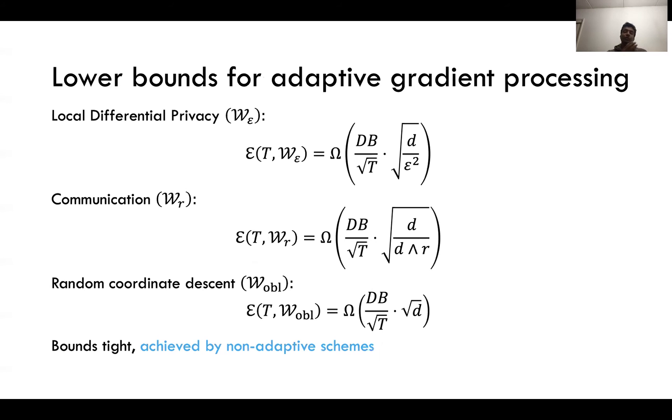In our work we prove the following lower bounds on the convergence rates for local differentially private information constraints, for communication constraints, and for random coordinate descent. What we show is that in each of these three cases there's a blow up that happens and we are able to characterize that blow up even when adaptive gradient processing is allowed. In fact these bounds are all tight and they are achieved by non-adaptive schemes, so in other words the upper bounds are achieved by non-adaptive schemes and the lower bounds we prove hold even when you allow for adaptivity.